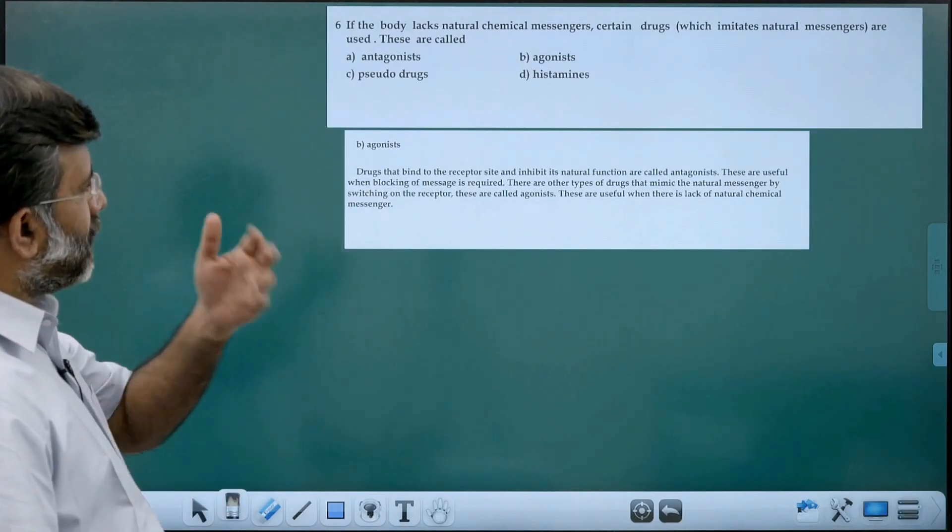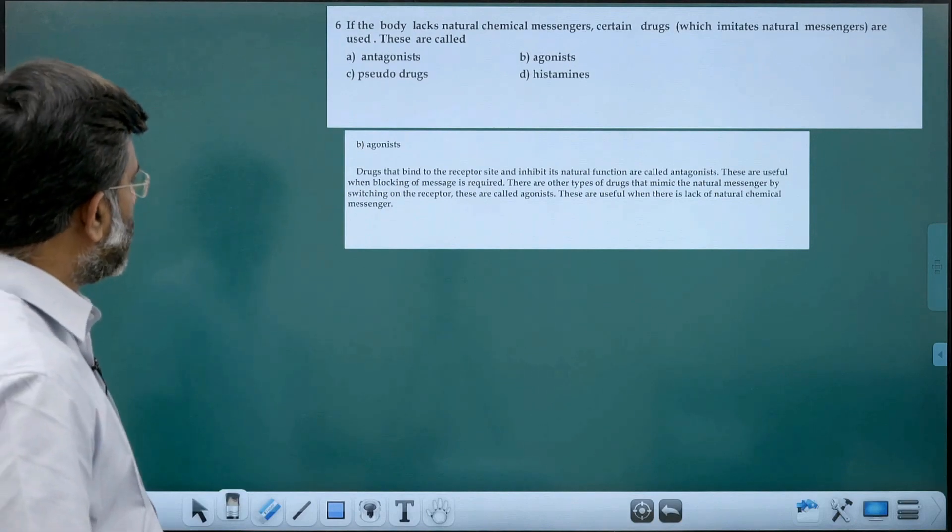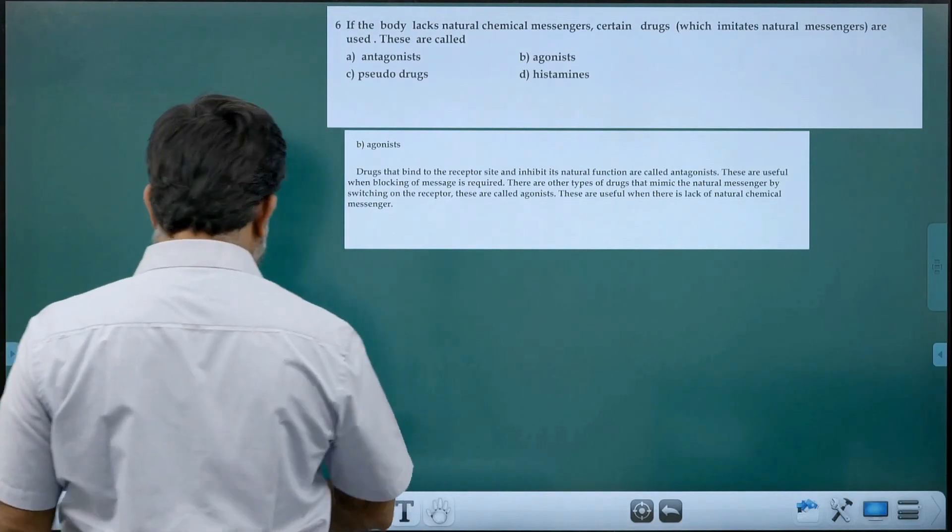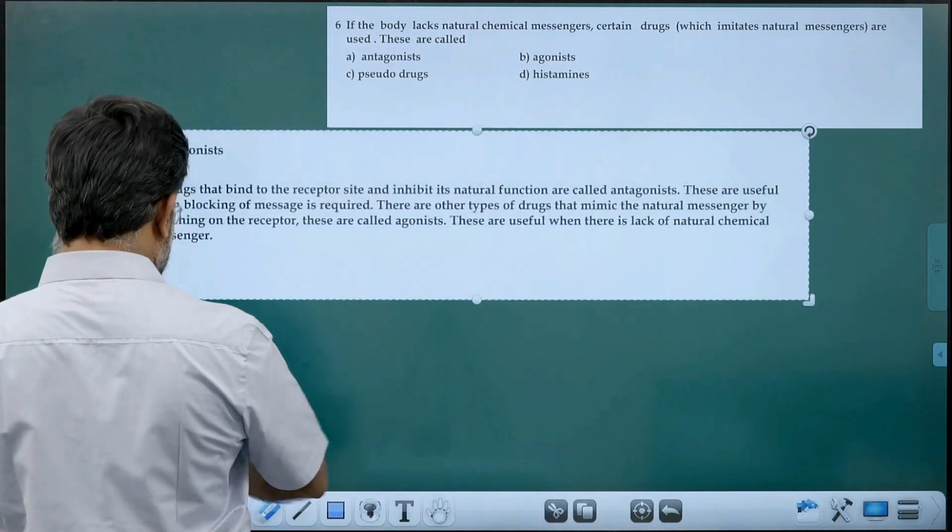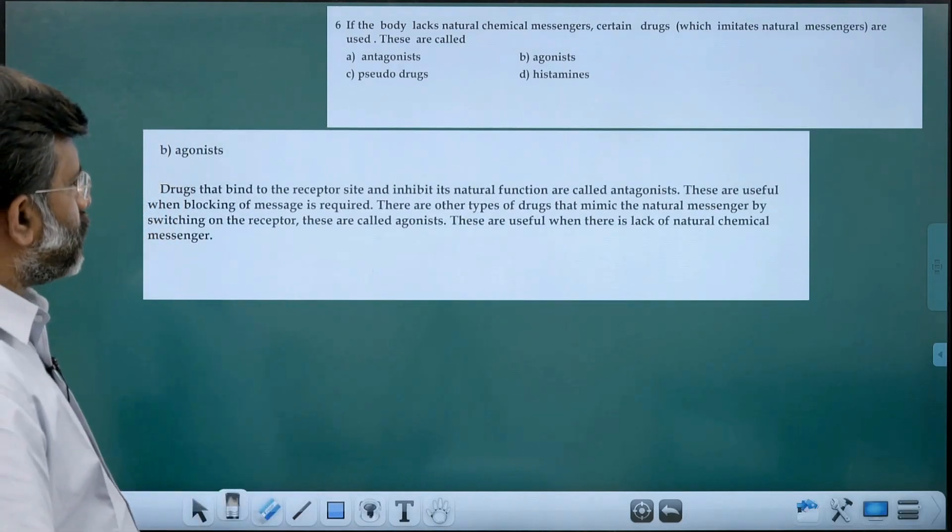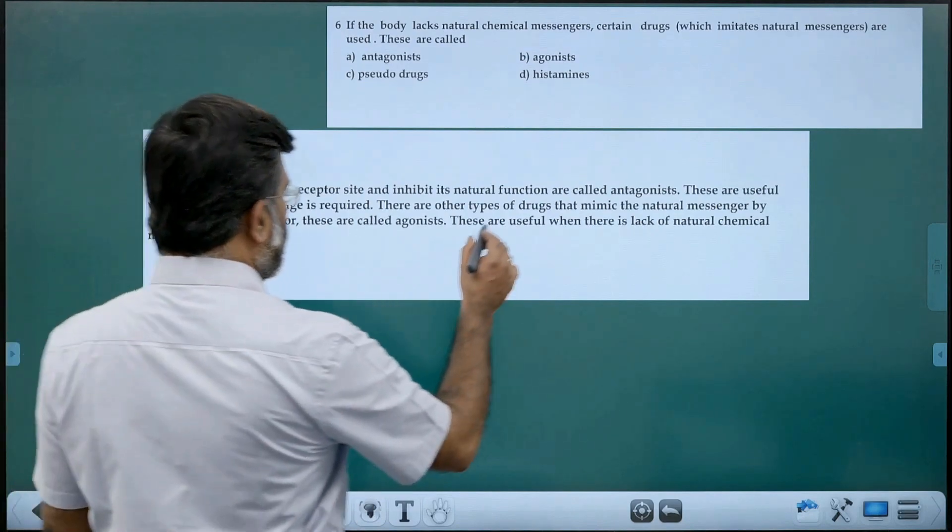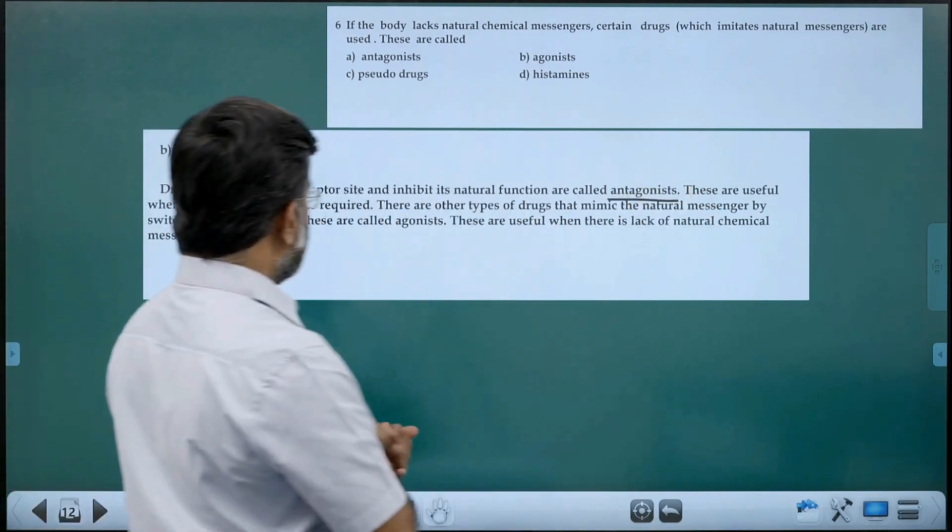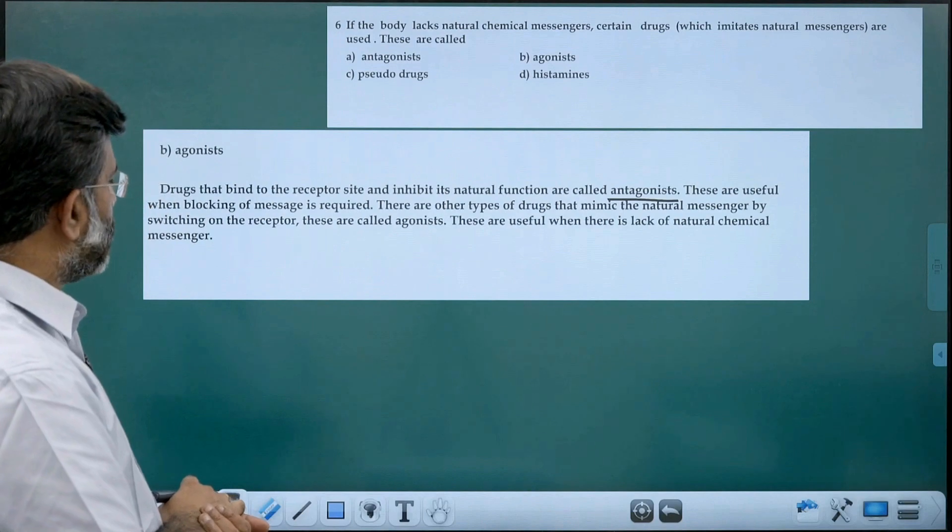Which imitate, imitate means mimicking. You see, the drugs that bind to the receptor site and inhibit its natural function, that is called antagonist. These are useful when blocking of message is required.